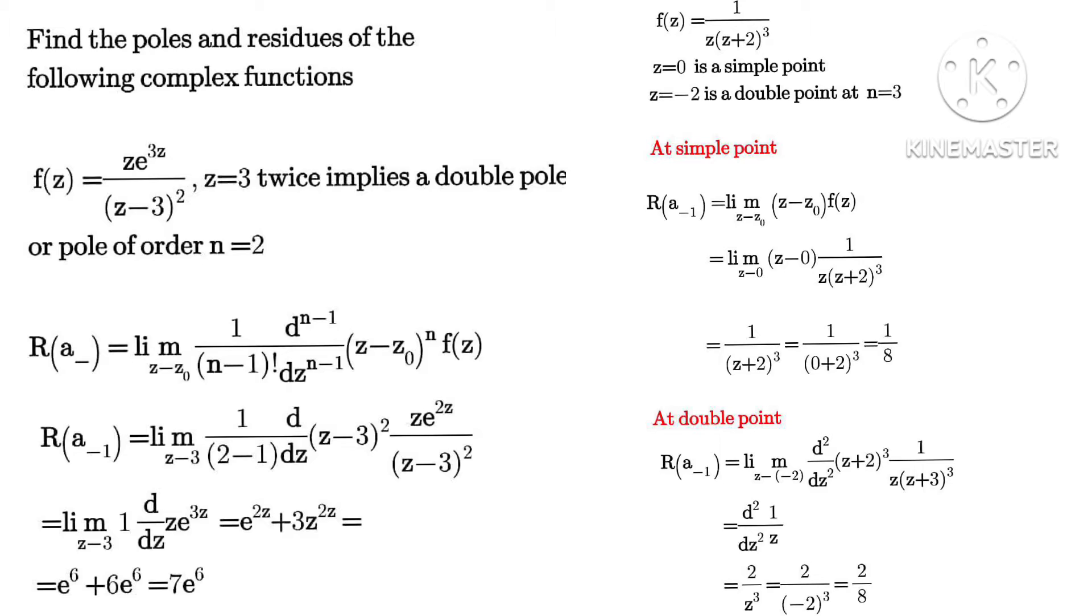be equals to 3 at analytical points, so that's 3 twice. This implies that we have a double pole since we are having raised to power of 2, and we have n to be equals to 2.